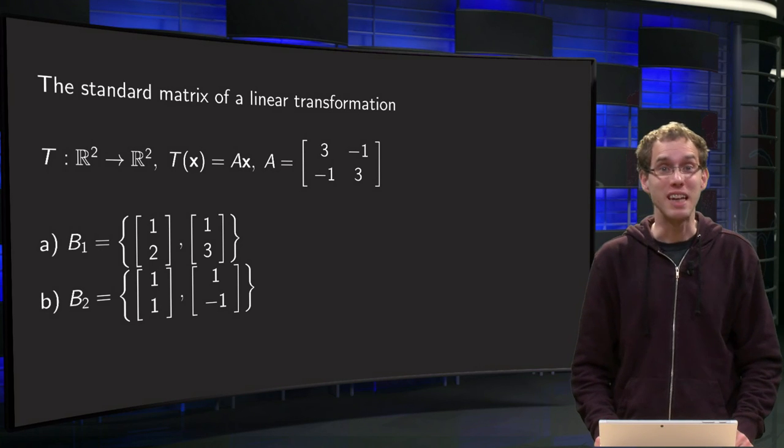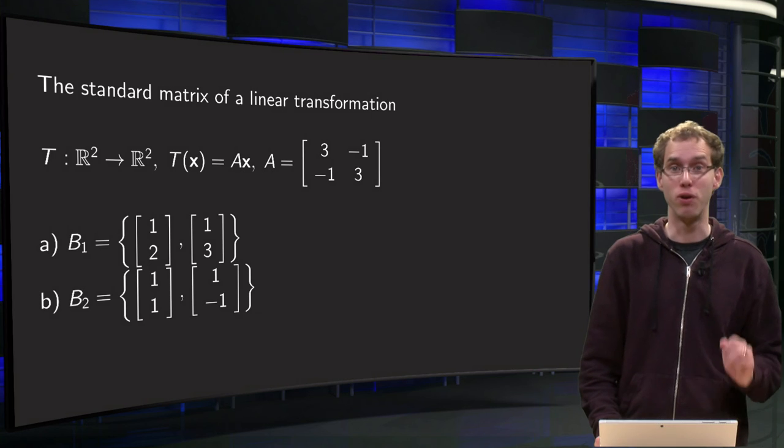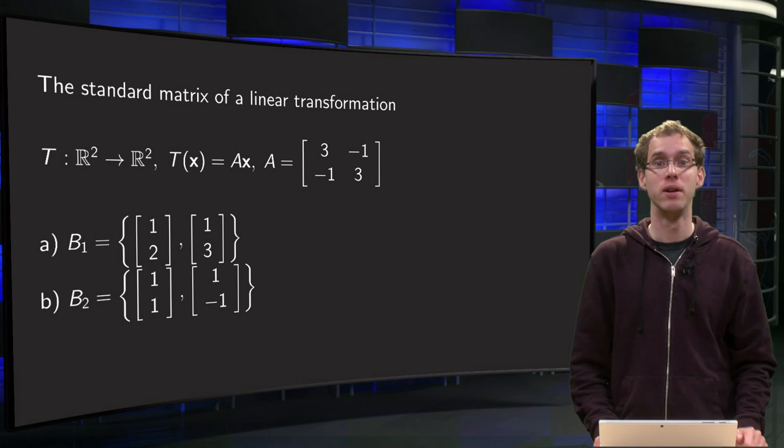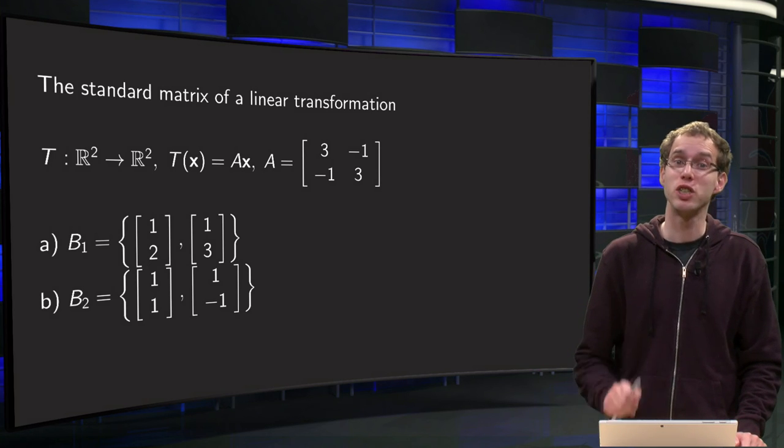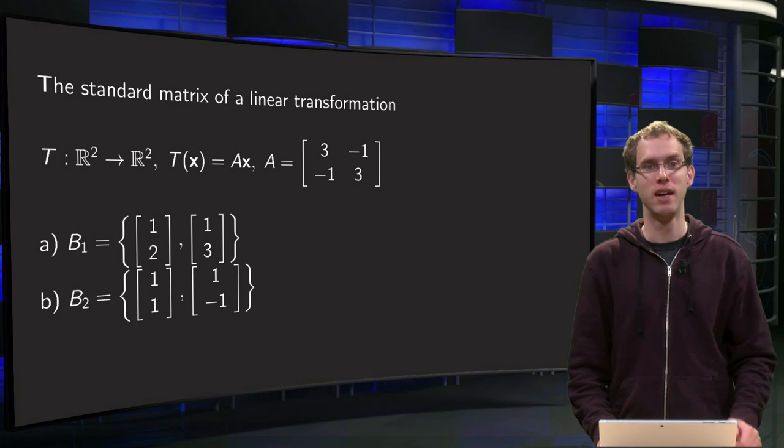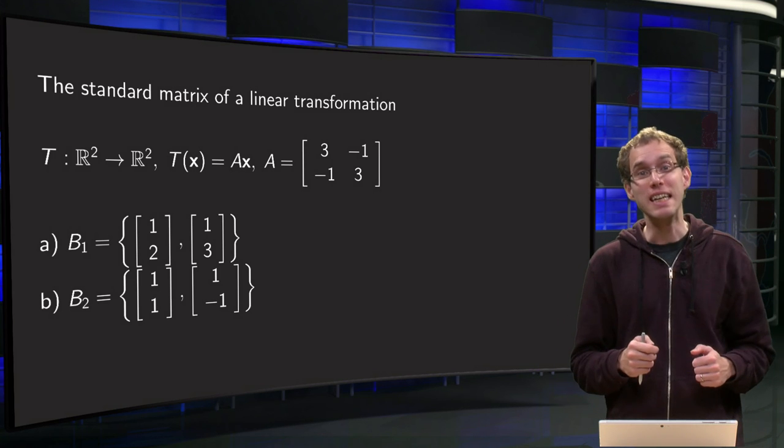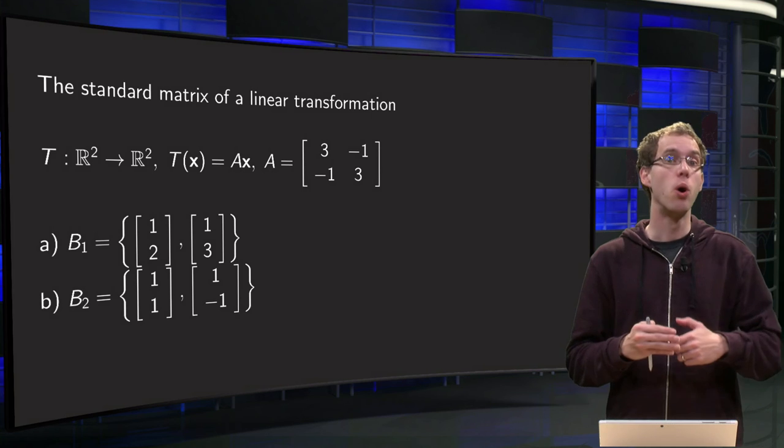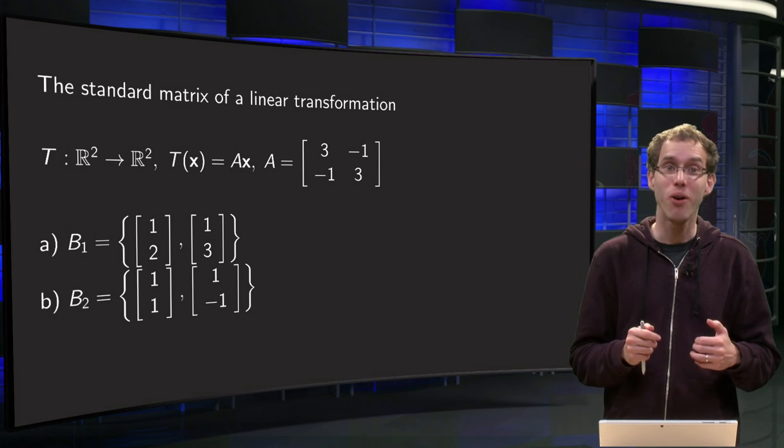Why do we want to compute the standard matrix of a linear transformation from Rn to Rn with respect to a basis which is not the standard basis? The standard basis is the easiest basis we have, so why bother with passing over to another basis at all?